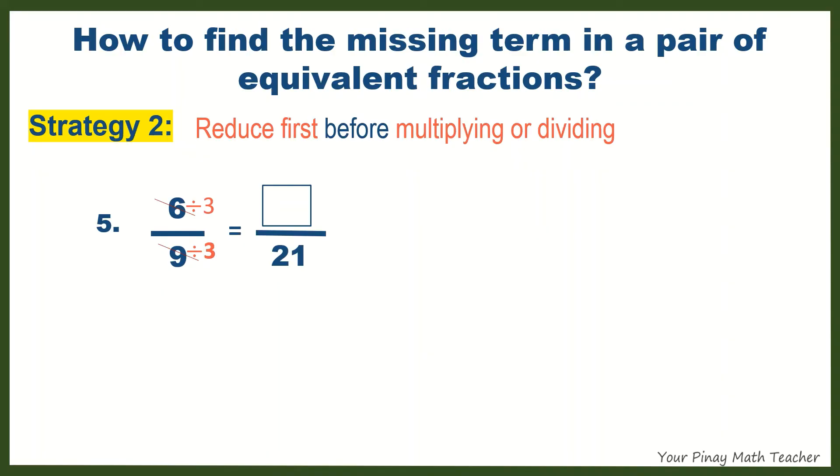That's why we have to reduce 6/9 by 3. 6 divided by 3 is 2. 9 divided by 3 is 3. 3 gets higher to 21. Therefore, we have to multiply 3 by a certain number, which is 7. Do the same with 2, so we get a missing term of 14.